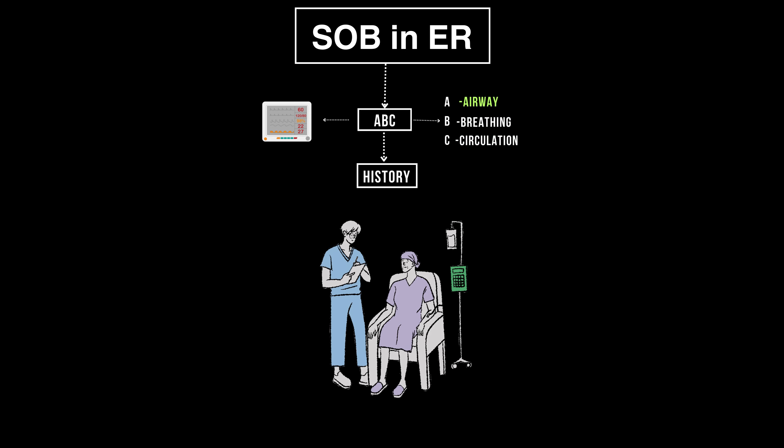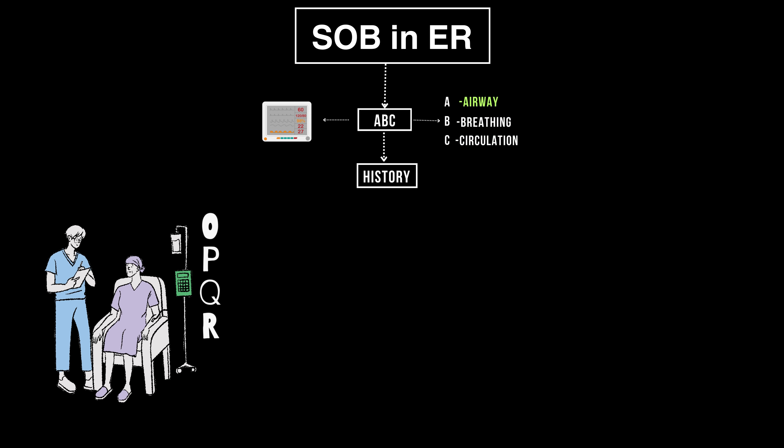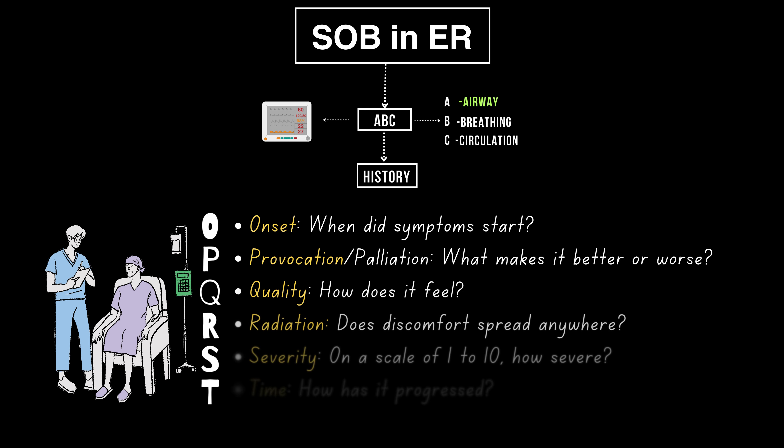Now, let's gather a quick but focused history. Use the OPQRST mnemonic — that is onset, provocation, quality, radiation, severity, and time. This helps you understand the nature of their breathlessness. Ask questions like: when did it start?